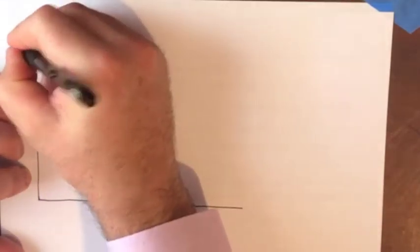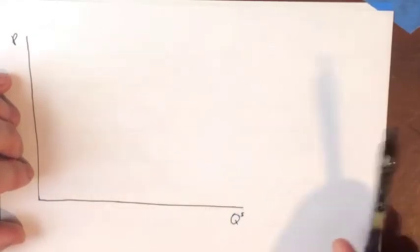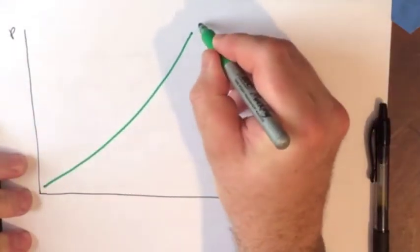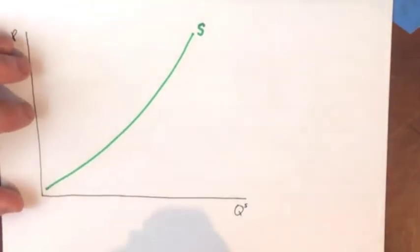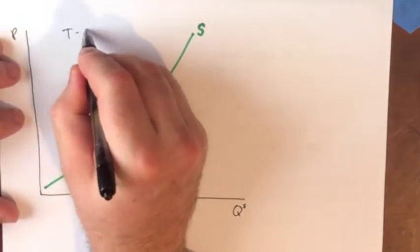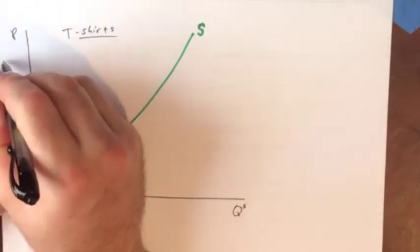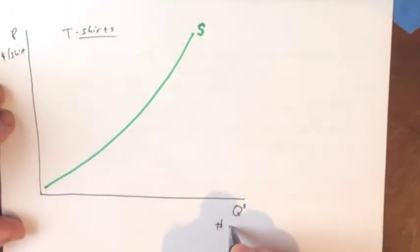This gives us a supply curve which is upward sloping. We're going to put the price on the vertical axis and we're going to put the quantity supplied on the horizontal axis. And we get an upward sloping relationship here between price and quantity supplied.